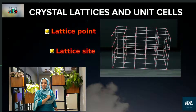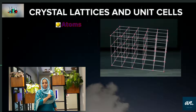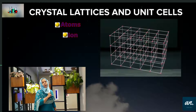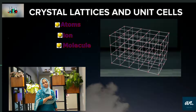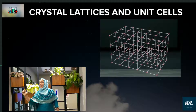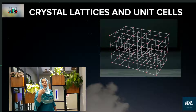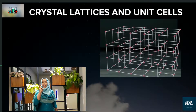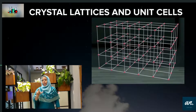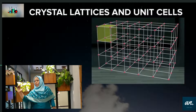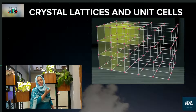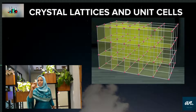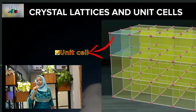What is a lattice point? Lattice points represent atoms, ions, or molecules arranged in a set of points. The smallest repeating unit in a crystal lattice or space lattice is called the Unit Cell.